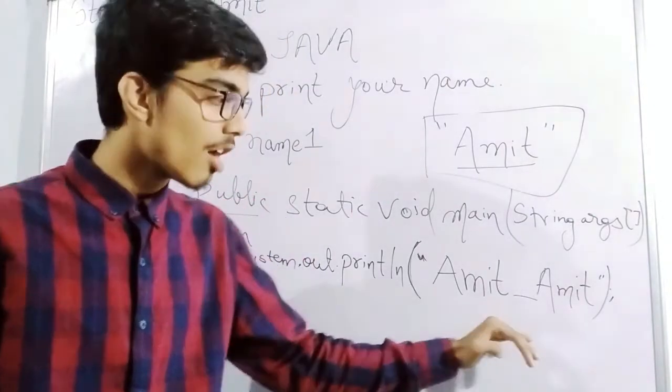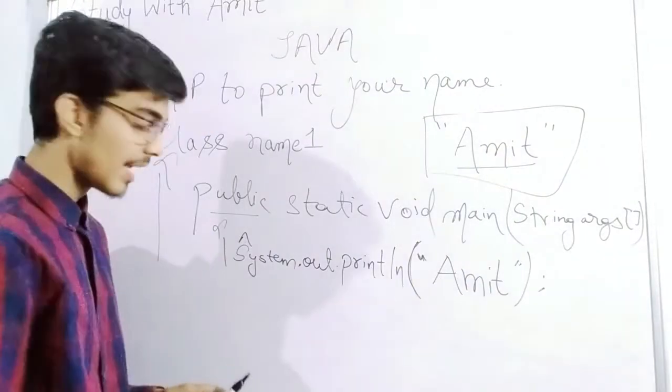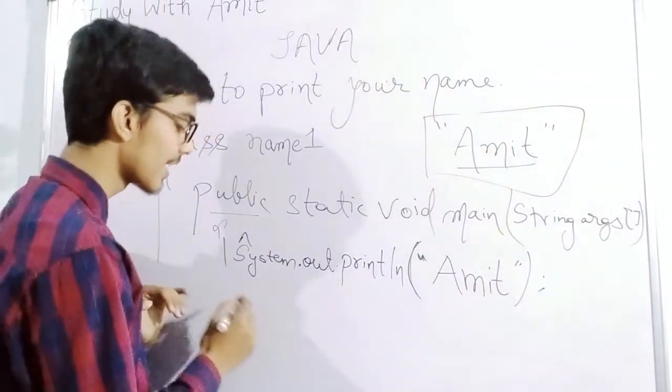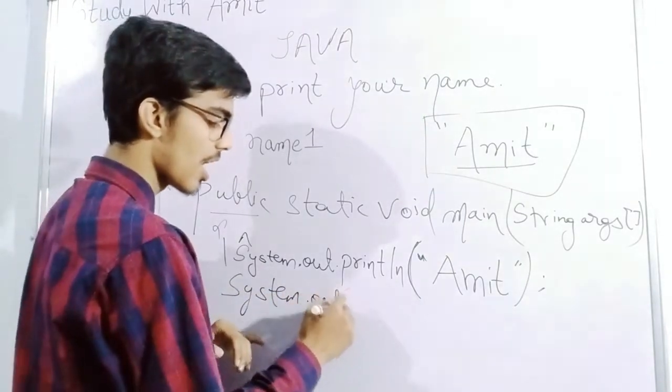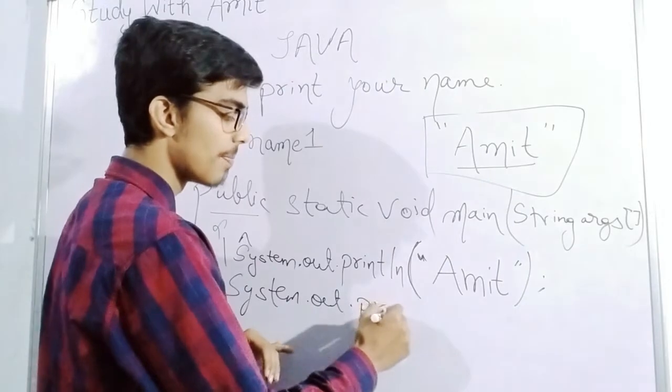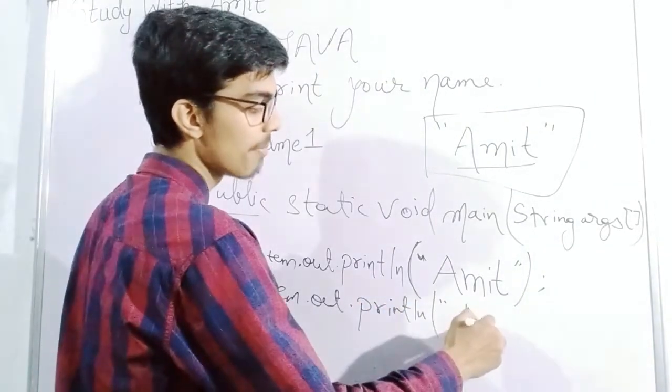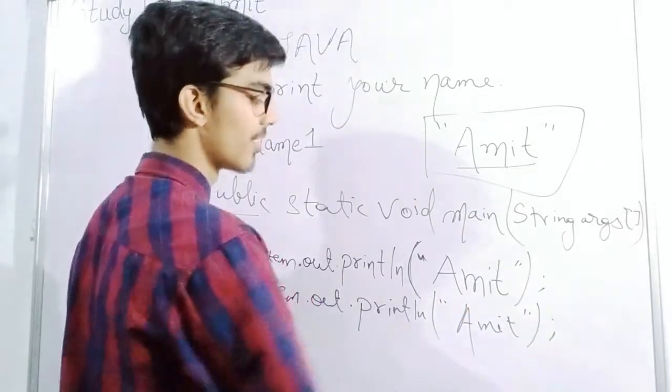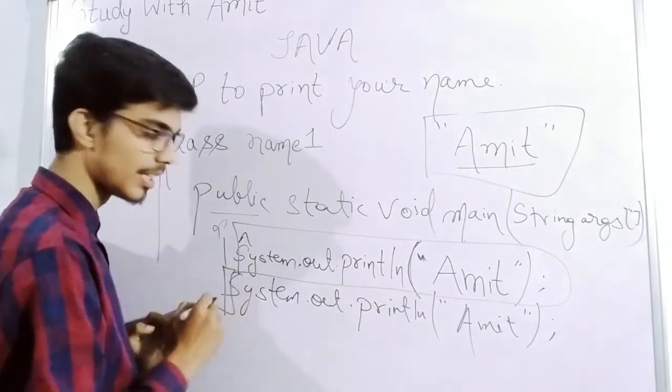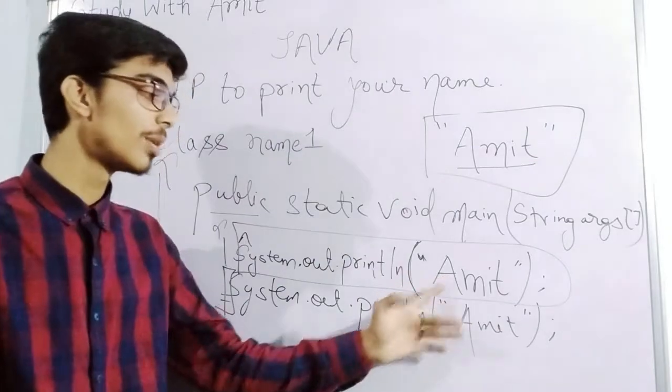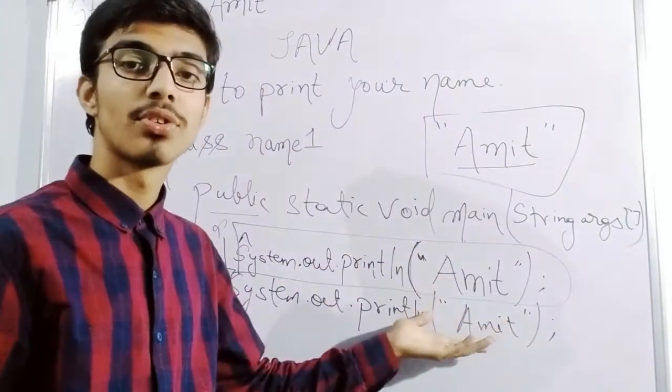Now if we have to print this in the next line, we'll write System.out.println again with Amit. Copy this one and paste it over here. So if you copy and paste, this will print twice.